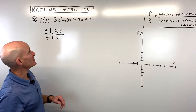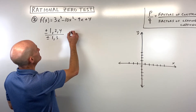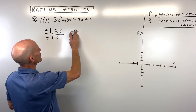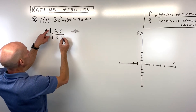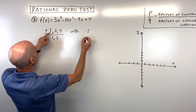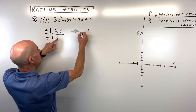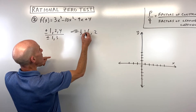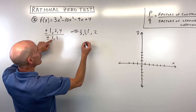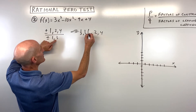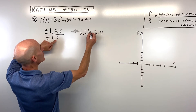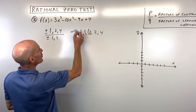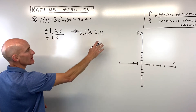Let's write them all out. Starting with the positive ones: 1 over 1 which is 1, 1 third, 2, 2 thirds, 4 over 1 which is 4, 4 over 3 which is 4 thirds or 1 and 1 third. And these are all plus or minus, positive or negative.